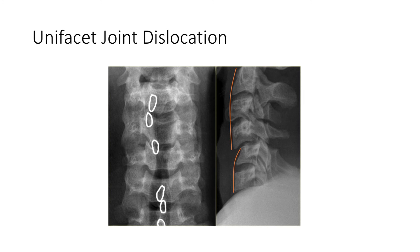Unilateral facet dislocation is an unstable dislocation with facet joint dislocation and rupture of the apophysial joint ligaments. The mechanism is flexion and rotation occurring simultaneously. Radiographic features are best seen on lateral or oblique views. There is anterior dislocation of the affected vertebral body by less than half of the vertebral body AP diameter — approximately 25% anterolisthesis. There is widening of the disc space and a bow-tie or bat-wing appearance of the overriding locked facets.